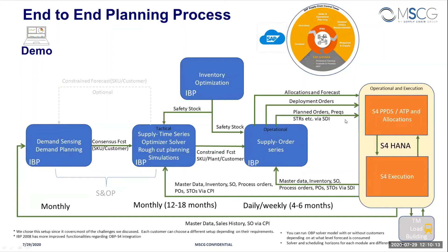We are going to do this demo in release 2005, but 2008 — coming out next week — has a lot more added capabilities from an integration point of view. Coming back to the demo: in demand planning we are going to get the consensus forecast at the SKU-customer level. We don't have a plant dimension here because we don't want sales people to know which plant to source from, and it also handles a lot of realignment issues.